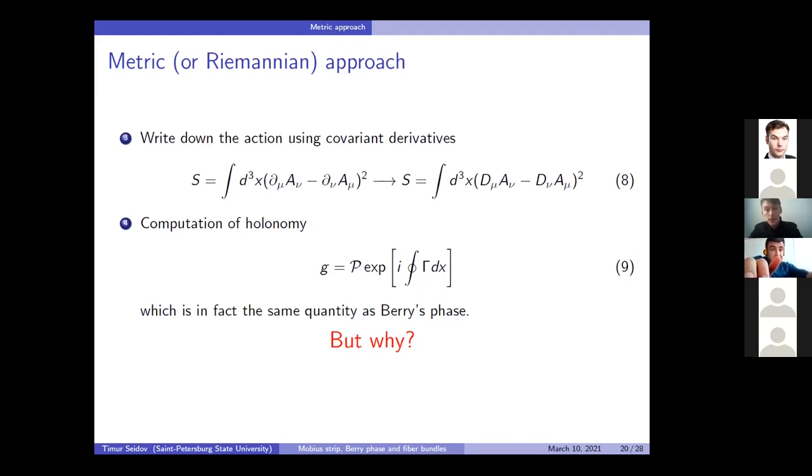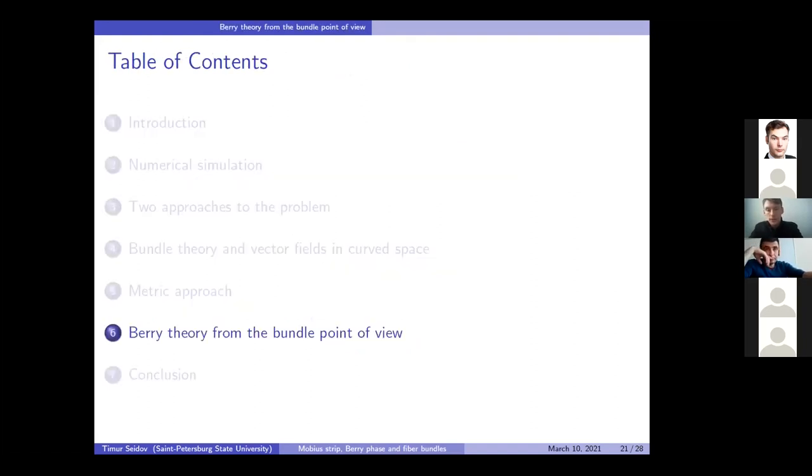So, after you've done all of that, and you computed all of your fields, you solved the field equations, and so on and so forth, you may compute the holonomy, which is given by the formula that we discussed above. And this is the same quantity as the Berry phase. But up to now, it is not obvious why. From my explanation, it is not obvious. In literature, of course, you can find it. Though not in these terms. To explain this, we need to view the Berry theory from the bundle point of view.